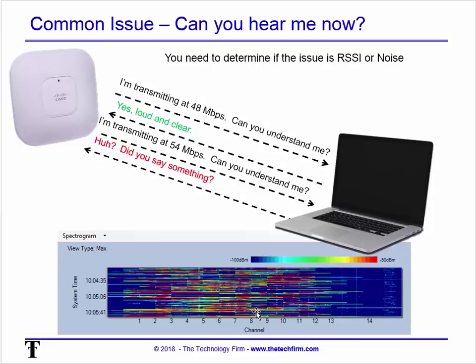Sometimes you can hear somebody loudly but not clearly. You might say your RSSI is great — a nice strong signal — but you don't have a unit of measurement to tell people how clear that is. Like tuning to radio station 99.9 and it's all static because you're out of range — cranking the volume isn't really going to fix that.